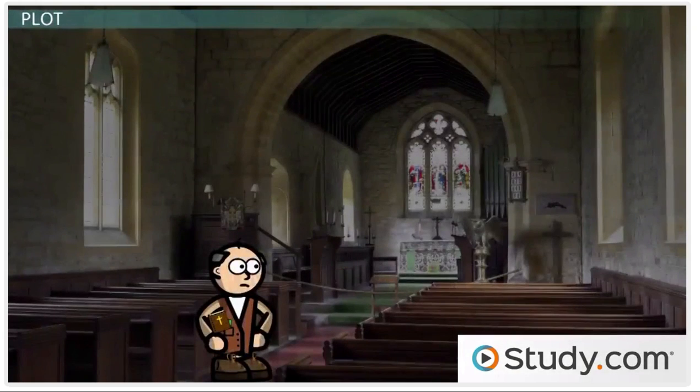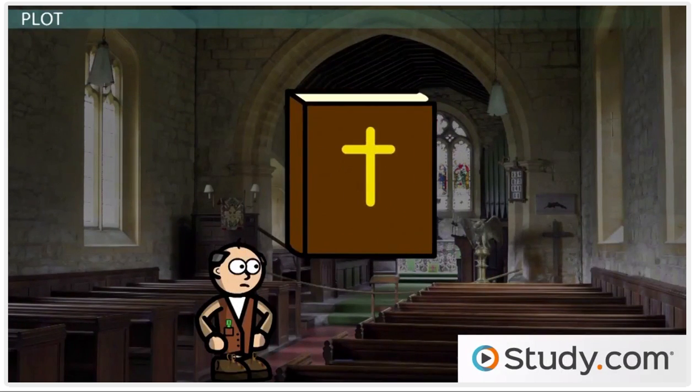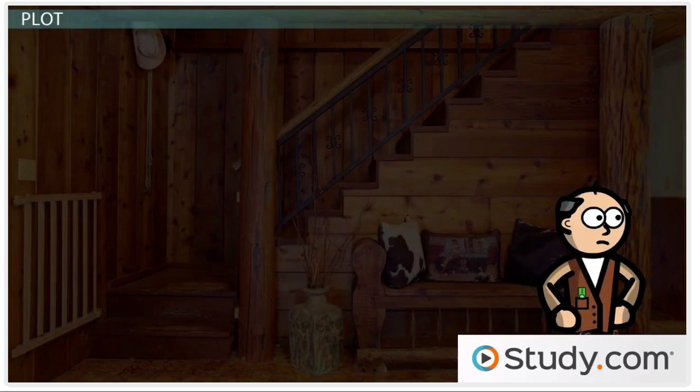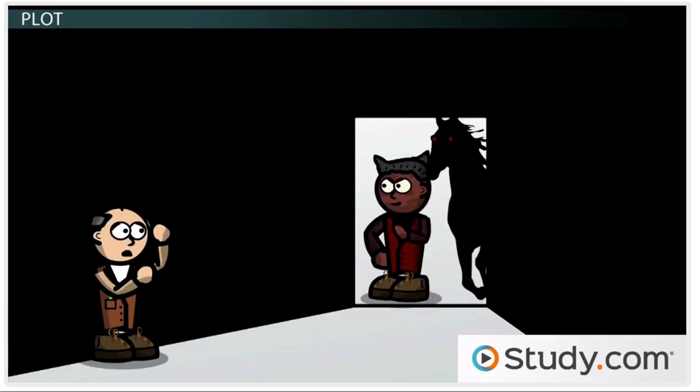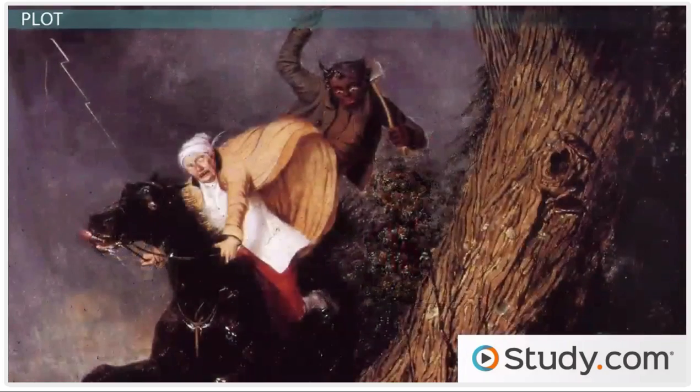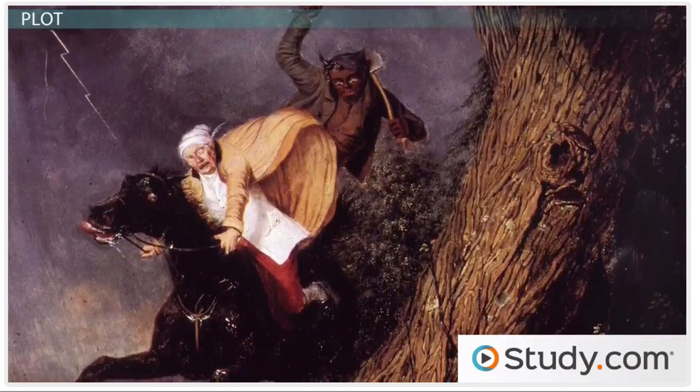After some years though, Tom starts to worry about the potential punishment for his acts, and tries to go to church to seek salvation. He carries a Bible everywhere he goes in hopes of warding off Old Scratch. This of course does not work when one morning, with his Bible under a stack of mortgages, Tom opens the door to find a black horse and a black man who says, Tom, you're come for. Tom is thrown upon the horse and swiftly taken back to the old Indian fort and gone in a blaze of fire.